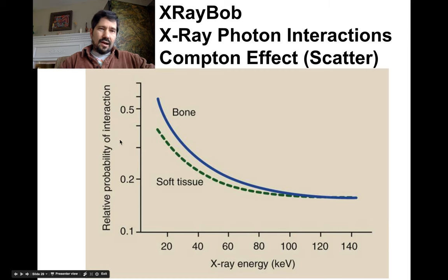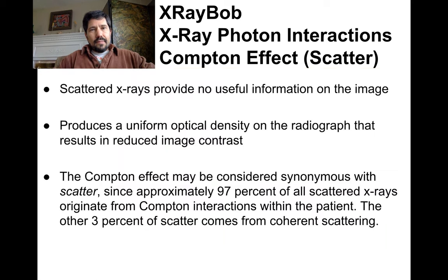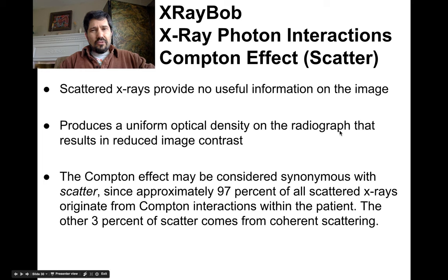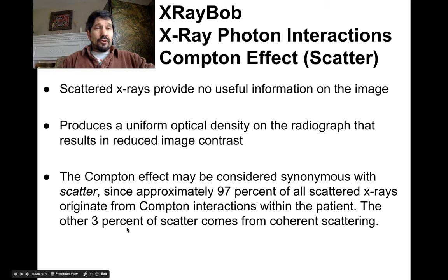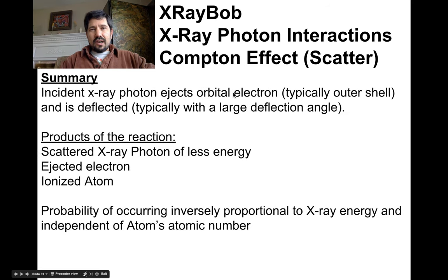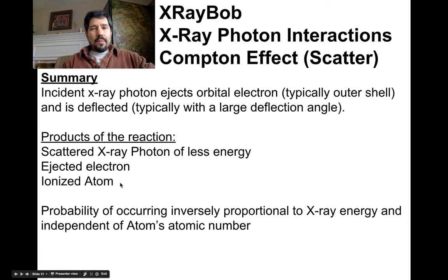The probability of a Compton effect occurring decreases as the energy level goes up. Those scattered x-rays are junk — they don't provide any useful information on the image. All the scatter just provides a uniform fogging of our image, which reduces the quality of our contrast. The Compton effect is about 97% of our scatter, and coherent is about the other three percent. The incident photon ejects an orbital electron, typically outer shell, and is deflected with a good-sized deflection angle. The products are the scattered photon of less energy, the ejected electron, and an ionized atom. The probability of it occurring depends on energy and doesn't care about the material's atomic number.